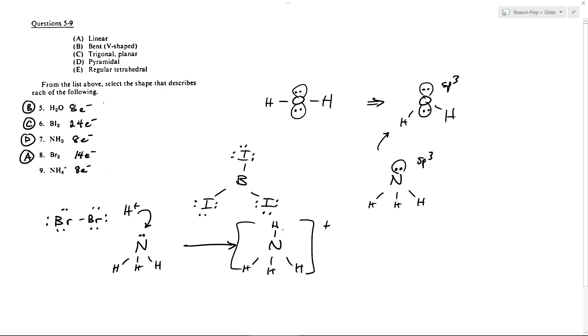I mean, it doesn't really matter for the purposes of answering this question. And so this would be the structure. It is tetrahedral, so we're gonna get choice E because we've got those four constituents surrounding it. And so that would be choice E. And that's it for those questions.